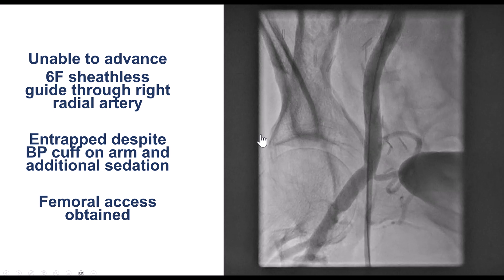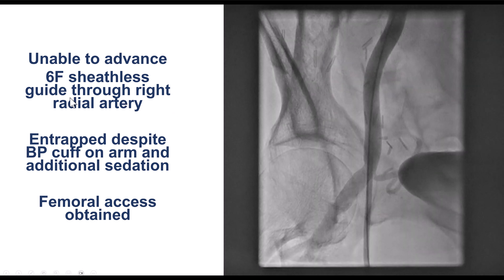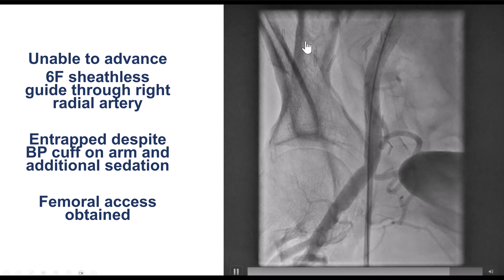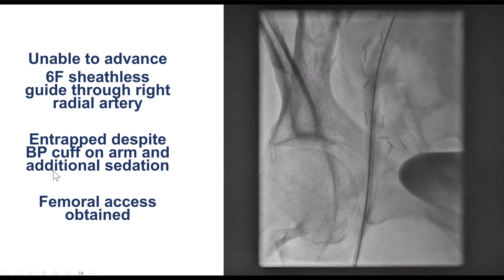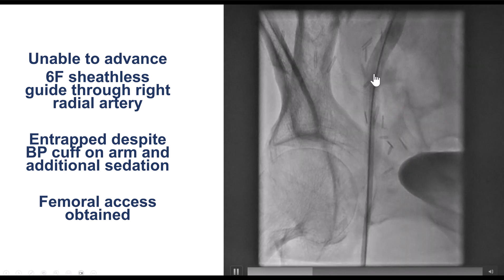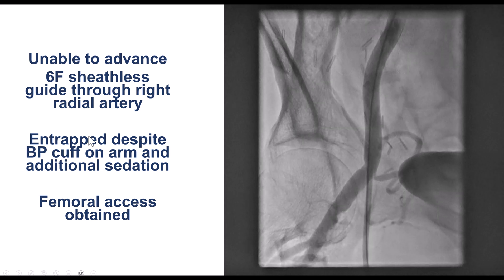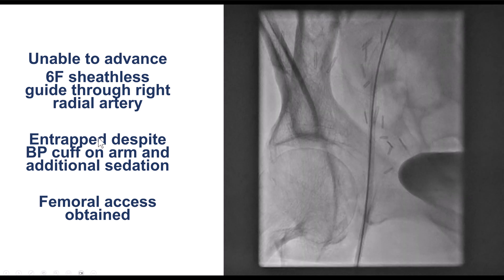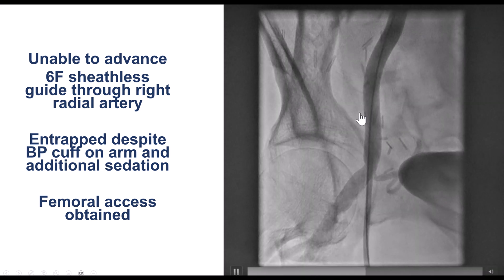However, despite doing the radial diagnostic cath with a six-french catheter, we were unable to advance a guide even using a sheathless approach. While we were trying to retrieve it, the radial guide catheter became entrapped. We tried warm blankets, vasodilators, and inflating the blood pressure cuff on the arm to cause ischemia-induced vasodilation, but we could not remove it.